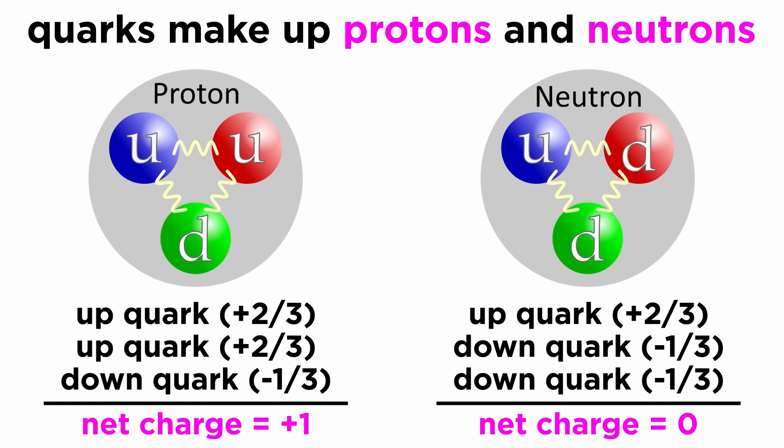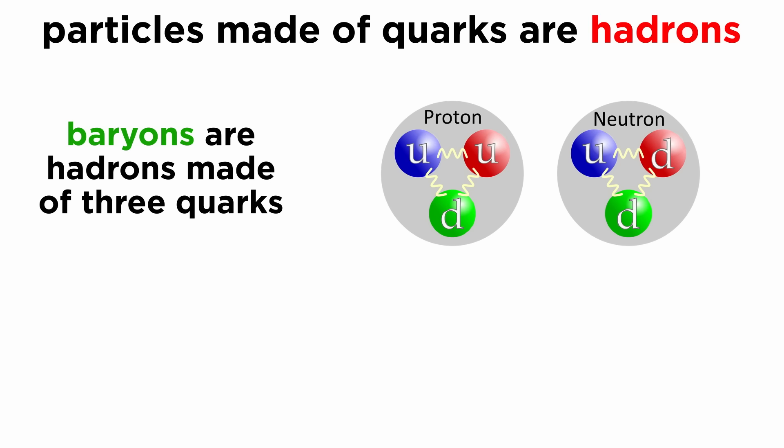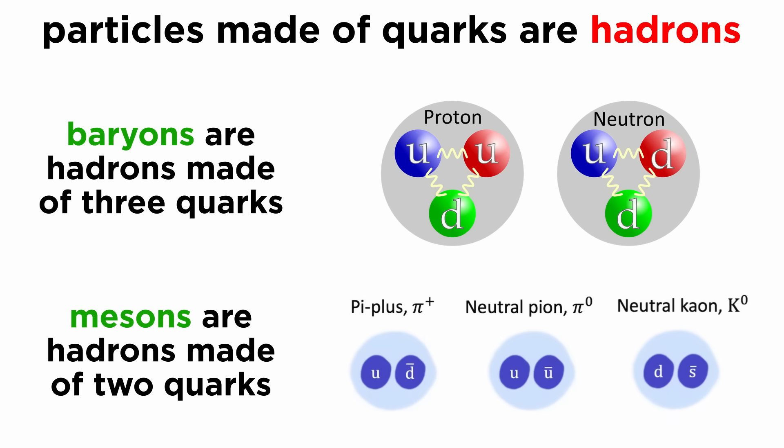Quarks are all charged particles, and in the case of the proton and neutron, the charges of the up and down quarks inside them add together to yield the plus one charge of the proton and the net zero charge of the neutron. Particles involving combinations of three quarks, like the proton and neutron, are called hadrons, but quarks can also be combined in pairs to form mesons.